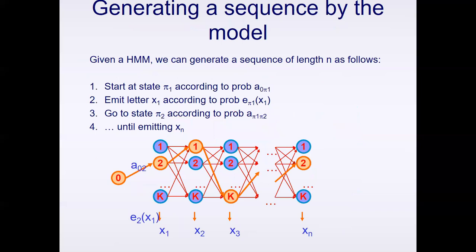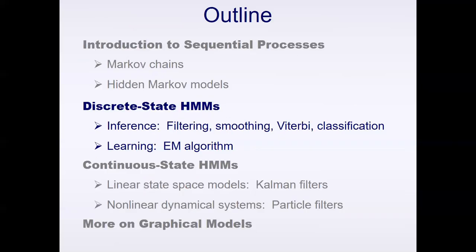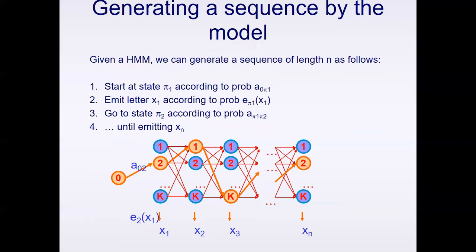Understanding that idea — that we have this huge grid, state transitions, moving through this grid from left to right through hidden states — is one of the main goals of a hidden Markov model, either for the purposes of learning, inference, or estimating states. We need to determine our path, or viable paths, through this grid, which will allow us to compute probabilities and infer or learn.